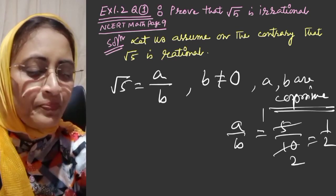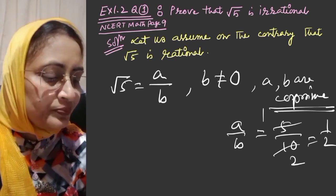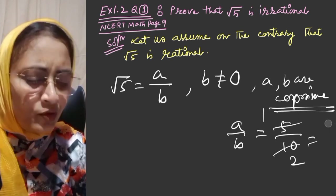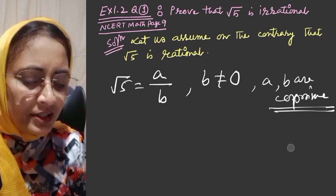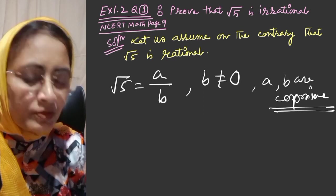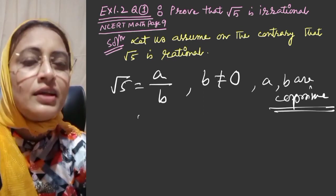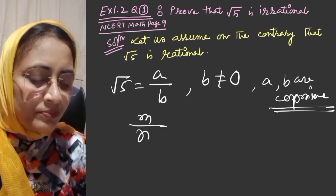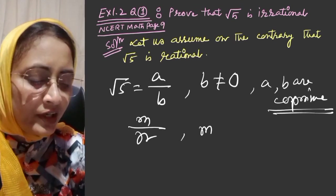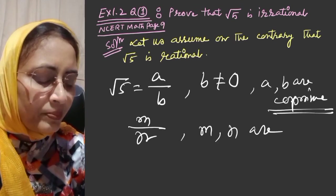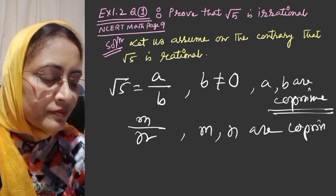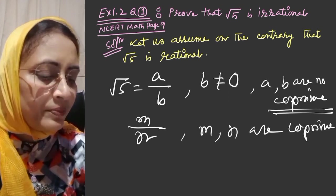We will write this in the lowest form. If m and n have a common factor, we can cancel it out. So m and n are coprime, meaning they have no common factor.